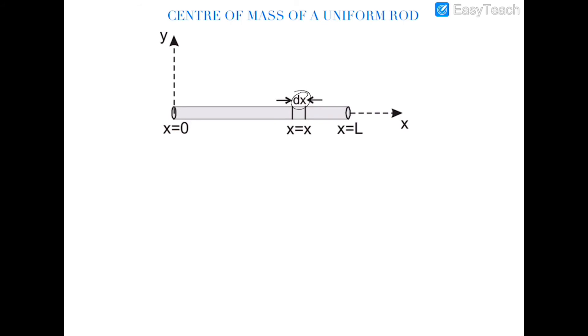You can see this, and the distance of this element from here is x, and the mass of this element dm will be equal to mass of total rod divided by length of total rod. This is mass per unit length, multiplied by the length of this element which is dx.